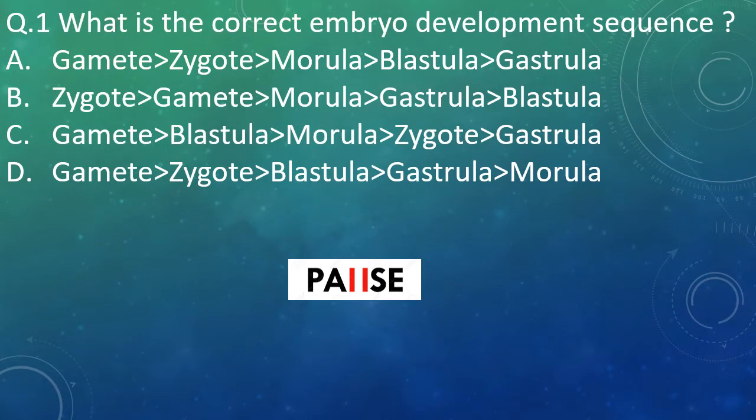Question 1: What is the correct embryo development sequence? Option A: gamete, then zygote, then morula, then blastula, then gastrula. Option B: zygote, then gamete, then morula, then gastrula, then blastula. Option C: gamete, then blastula, then morula, then zygote, then gastrula. Option D: gamete, then zygote, then blastula, then gastrula, then morula. And the right answer is...